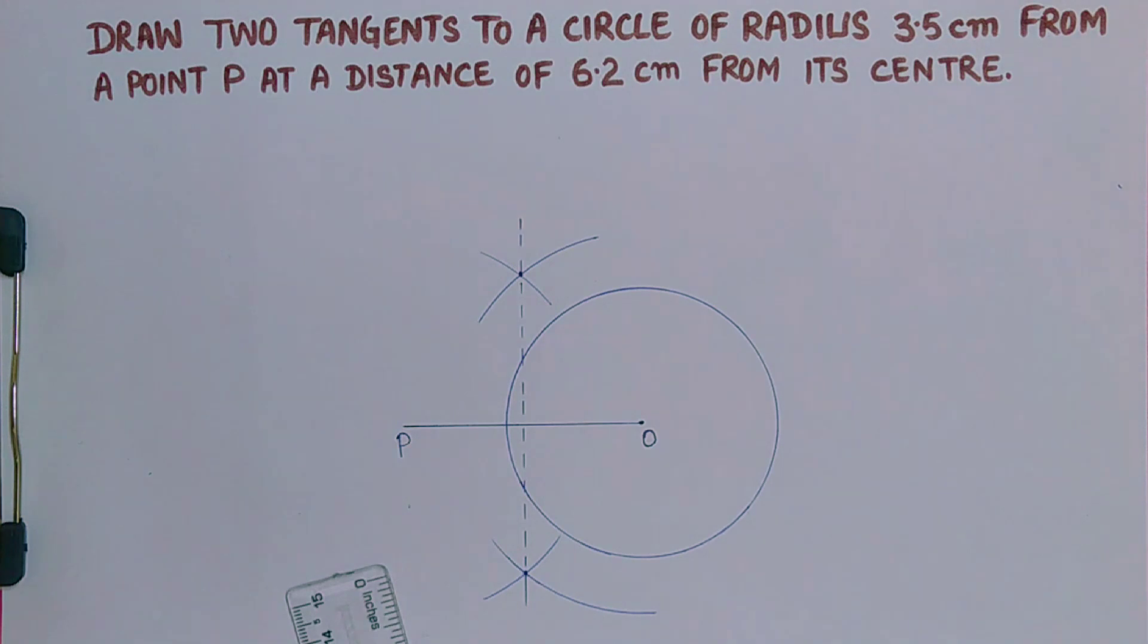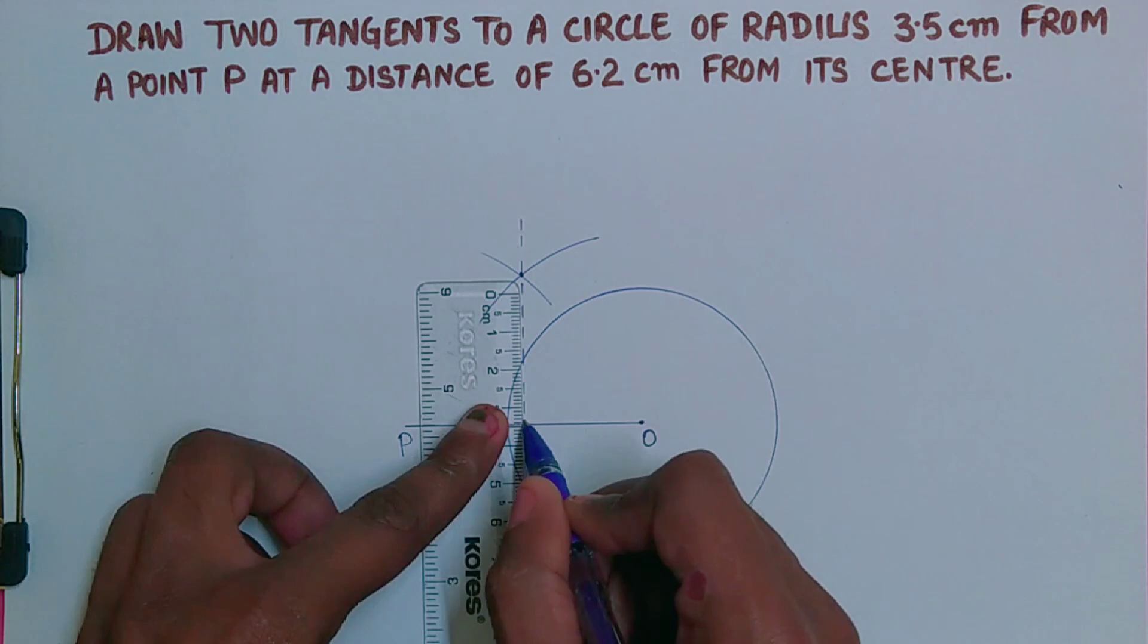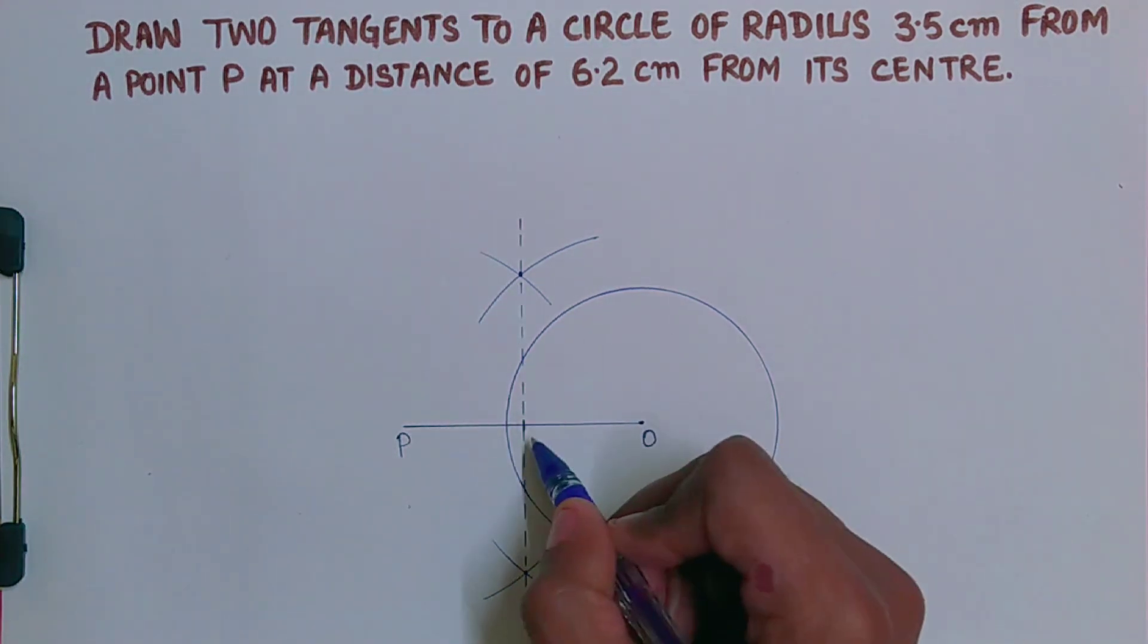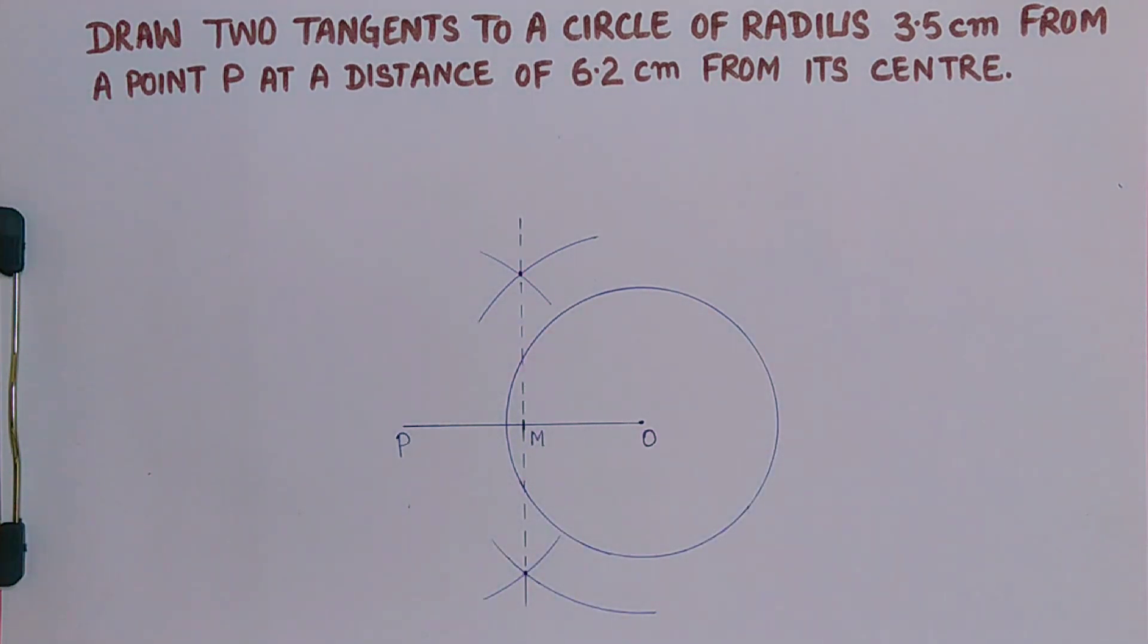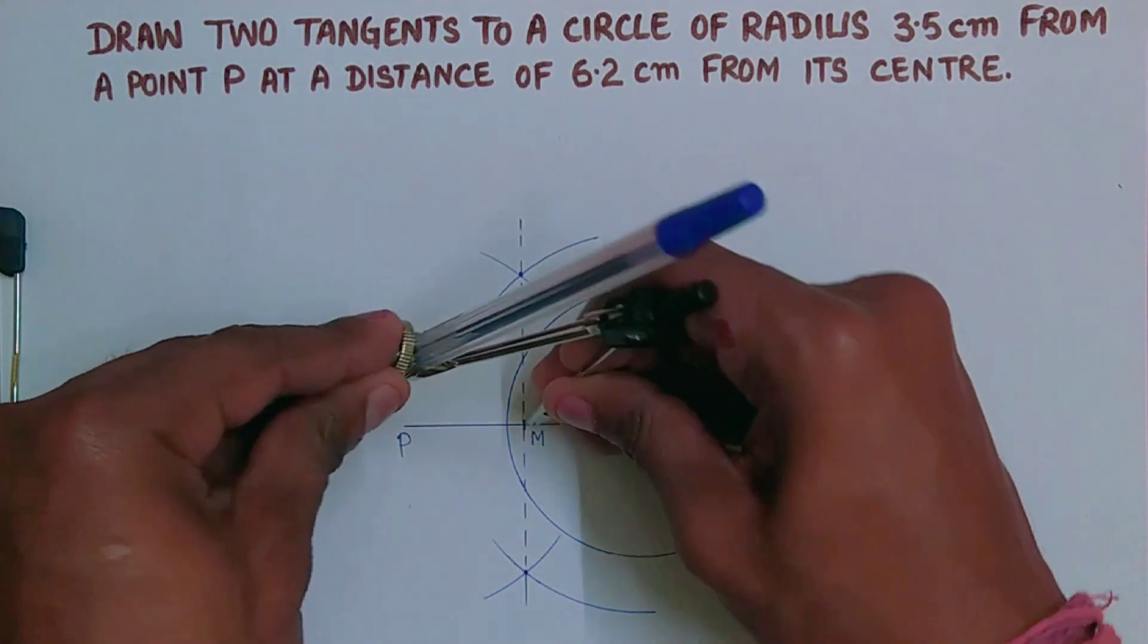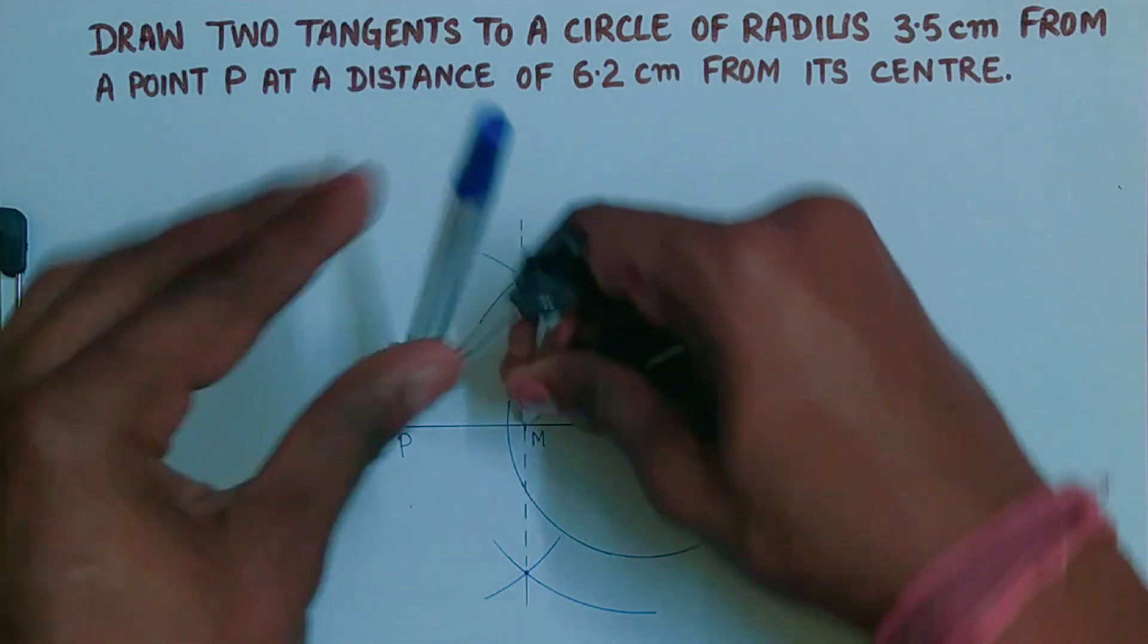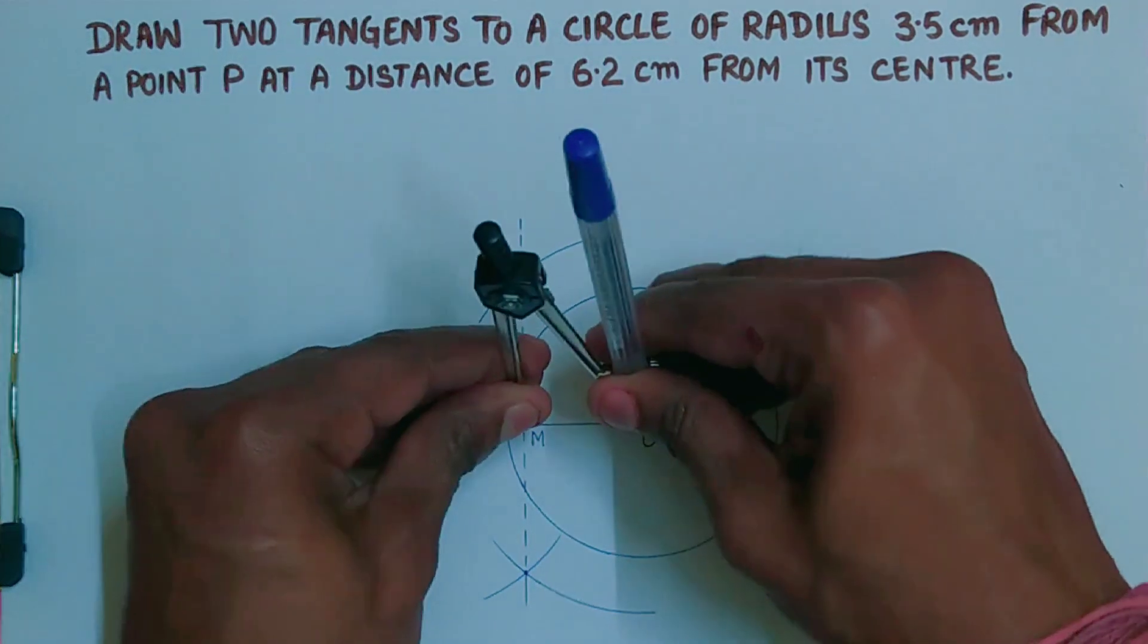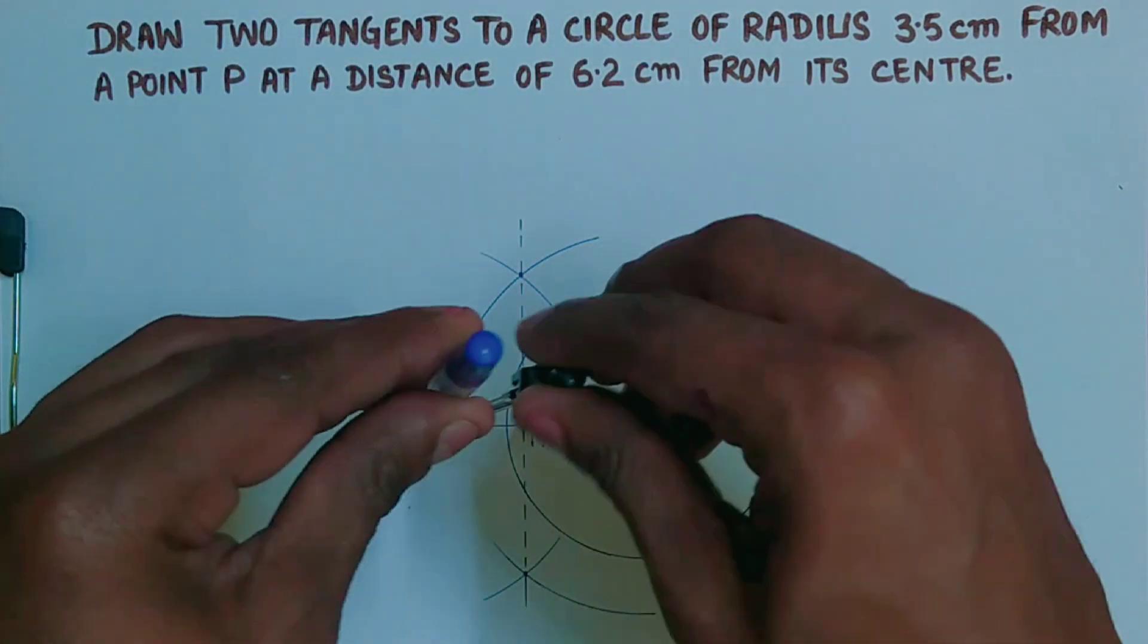Okay, now you can mark it as M. Now this MP and MO will be the same. Now we have to draw a circle.